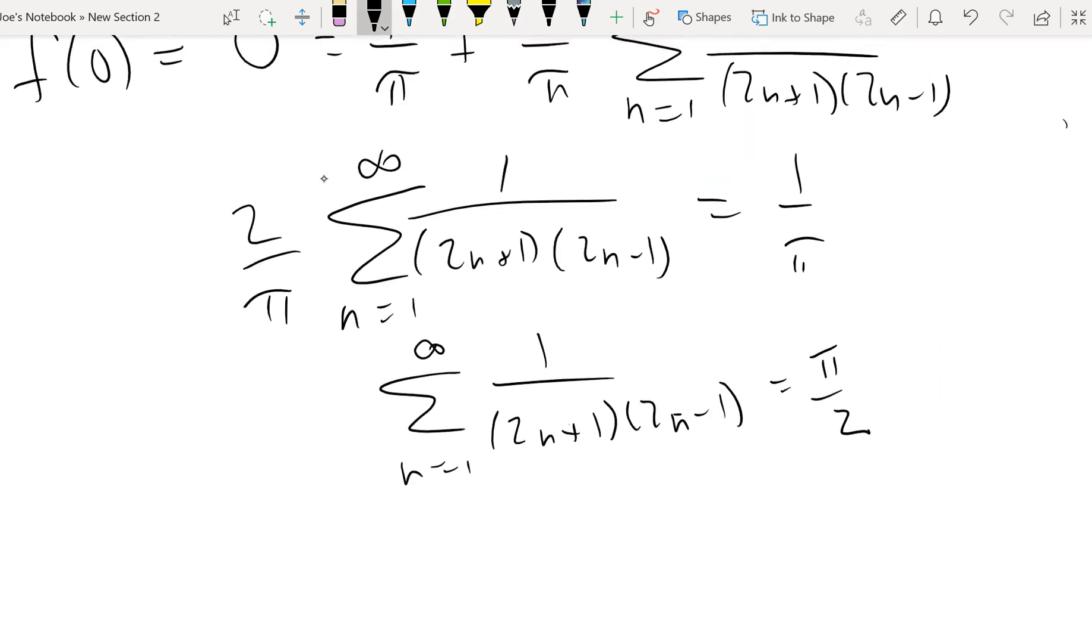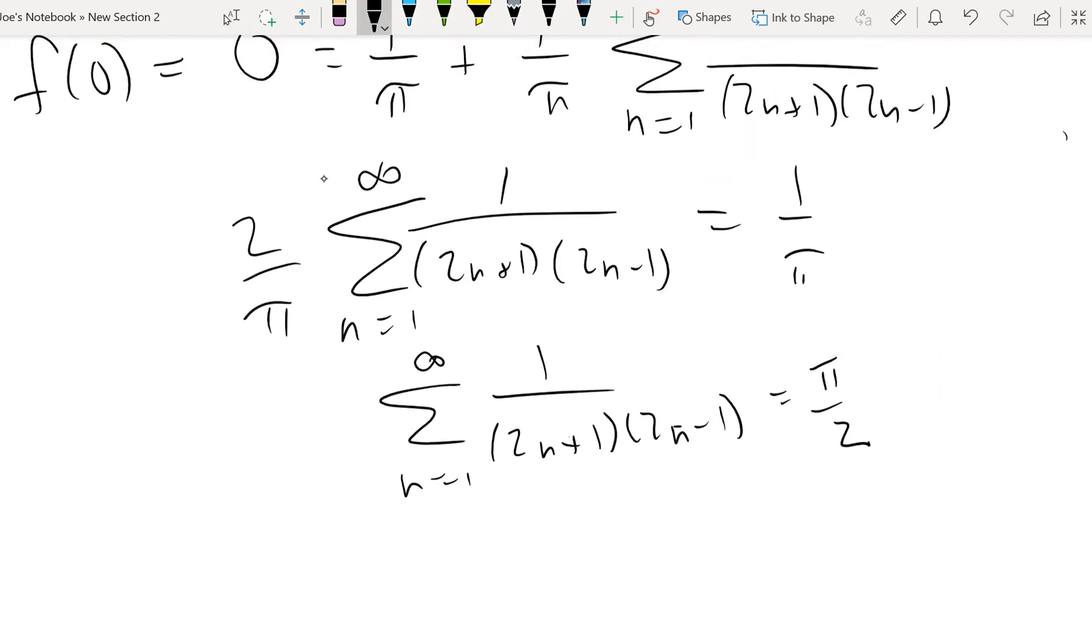Alright, so if we start plugging in some numbers here, we notice that if we plug in 1 here, we get 3 times 1. So we get a third. And if we plug in 2, we get 5 times 3. So you get 1 over 3 times 1 plus 1 over 5 times 3, and so on down the line. And that should be equal to π over 2.